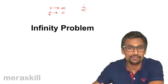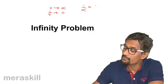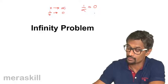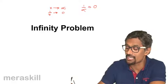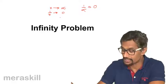It will not be 0, it will be approximately equal to 0. So whenever x is approaching infinity, it means 1 by x will approach 0.